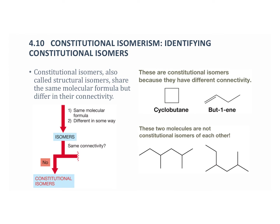The rest of this chapter is going to talk about constitutional isomers and how to identify them. Constitutional isomers — also known as structural isomers — have the exact same molecular formula but differ in their connectivity. For example, cyclobutane and but-1-ene both have the same molecular formula, but one is a ring and one has a double bond, so these are constitutional isomers because they have different connectivity.